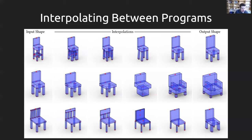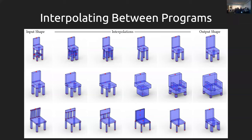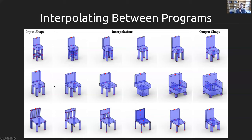There was a question about the middle interpolation showing a pedestal chair despite four-legged chairs on both ends. What actually happens, if you played a video, is the legs shrink into the middle, fuse to become a pedestal, the pedestal grows out into a big fat armchair base, and then the armchair base starts to grow little legs on the end — so it does make a nice continuous sequence. We just didn't get the optimal freeze-frame illustration in time for the SIGGRAPH deadline.